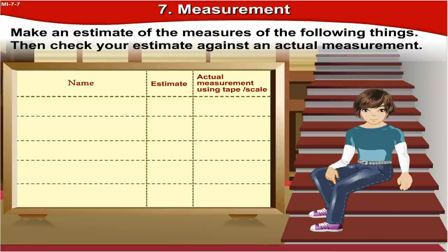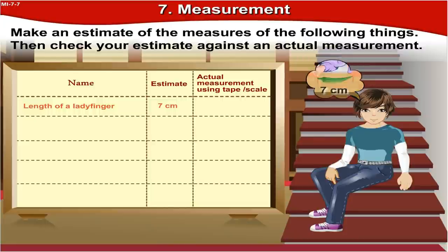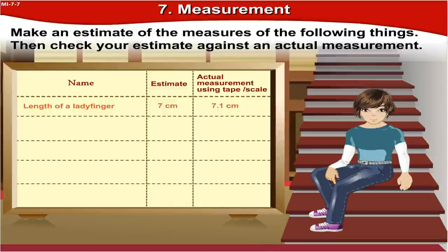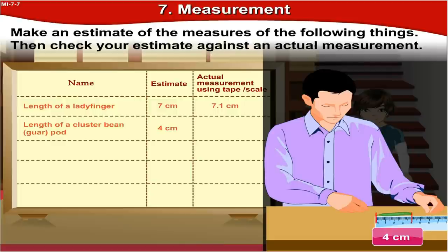Kids, make an estimate of the measures of the following things, then check your estimate against an actual measurement. Length of a lady finger — Tony estimated it at 7 centimeters, and the actual measurement is 7.1 centimeters. That's a great guess, Tony! The length of a cluster bean or guar pod — Nandu estimated it to be 4 centimeters, and the actual measurement is 4 centimeters as well.